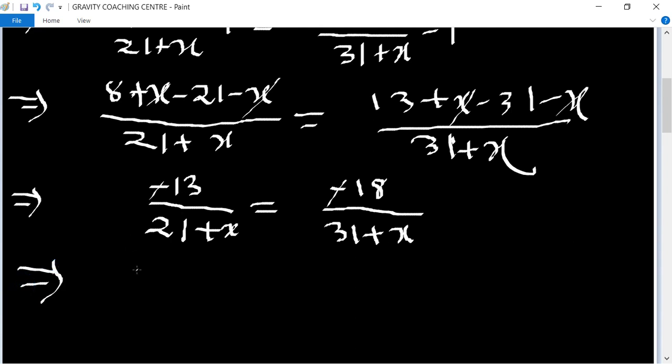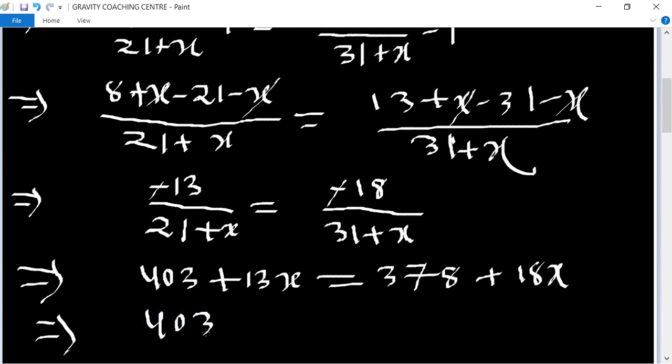Cross multiplying: 403 minus 13x equals 378 plus 18x.